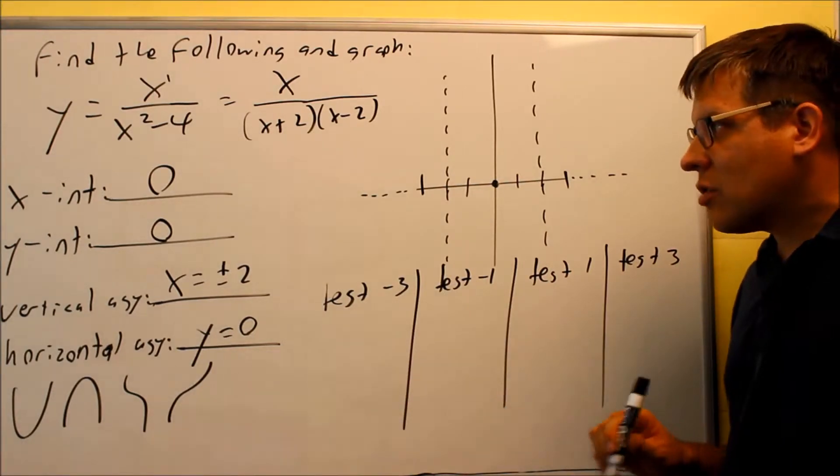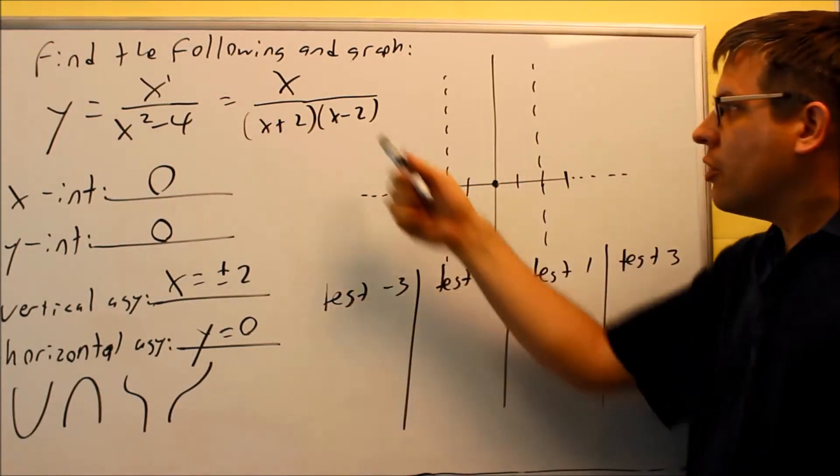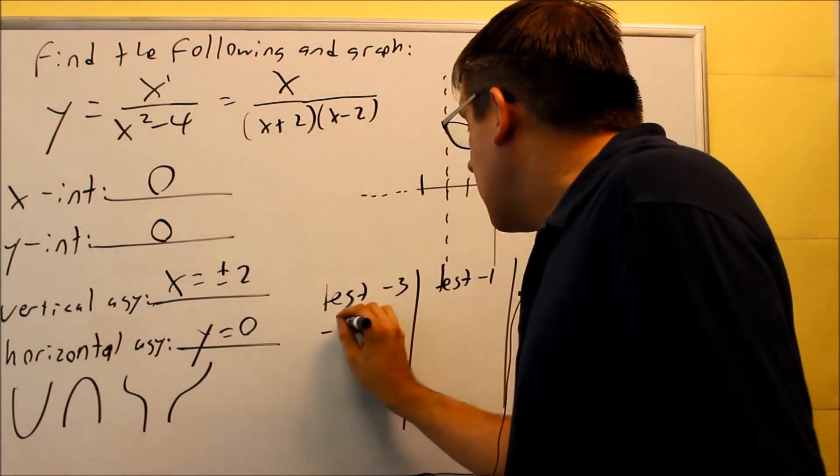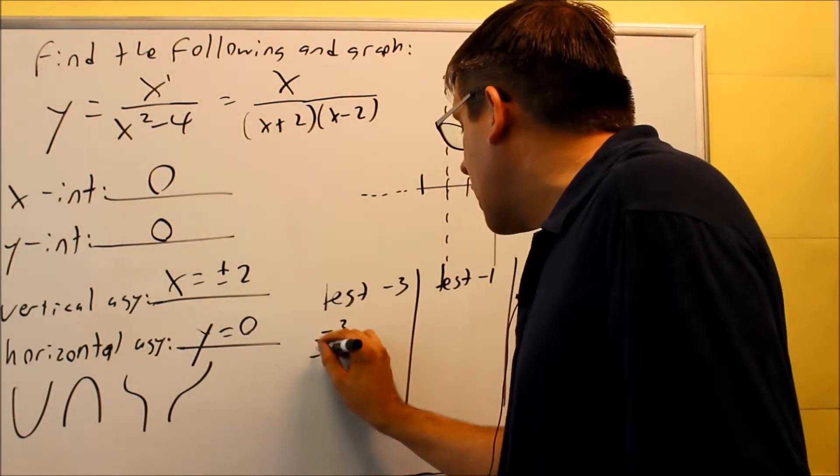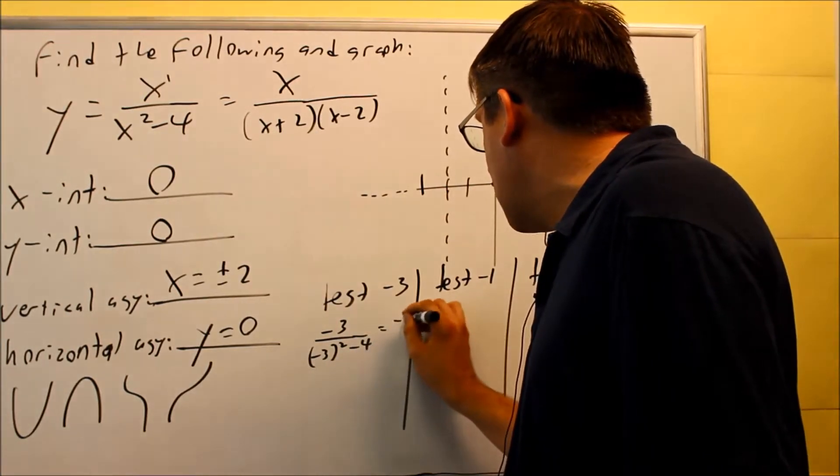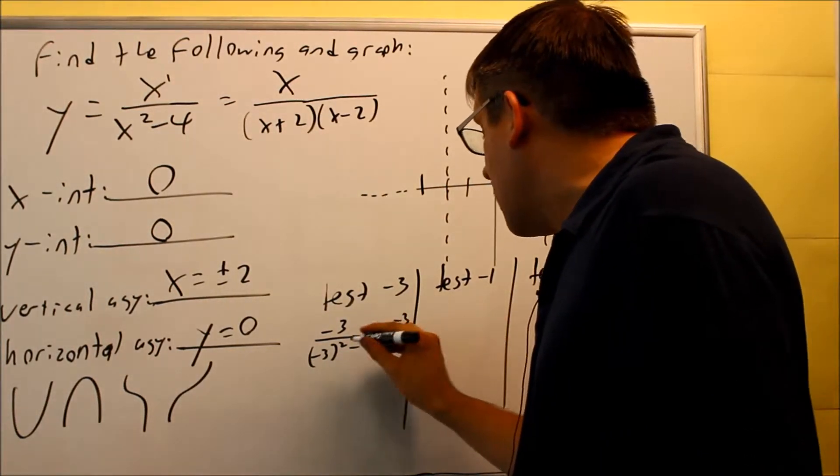Okay, so if I test negative 3, I'm putting that into, you can either use the original one or the factored one, it doesn't matter. I'll use the original one. So negative 3 over negative 3 squared minus 4 means that we get negative 3 over 5.